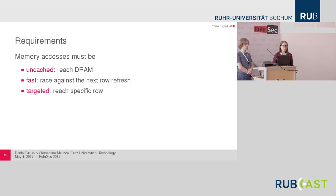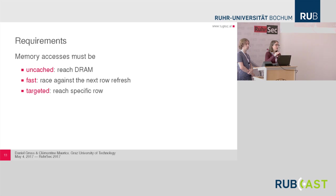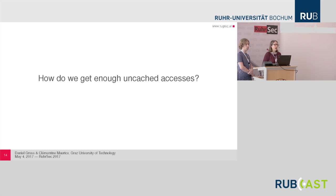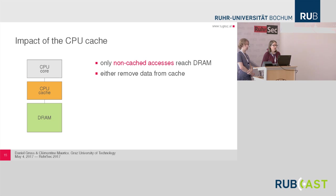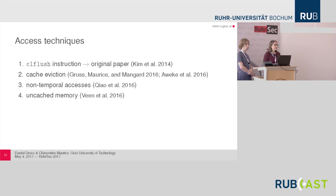To have these bit flips, we have several requirements. First, memory accesses must be uncached — they have to really reach the DRAM, else we don't have this effect. We also need lots of them in a very short time, because this is a race against the next row refresh: we need as many accesses as possible between two refreshes. And they also need to be quite targeted, because we need to reach those two specific rows to cause bit flips in the middle. The first question is: how do we get enough uncached accesses? The CPU cache plays an important role here, as it sits between the CPU core and the DRAM. If you just do naive accesses, they will all stay in the cache and never reach the DRAM.